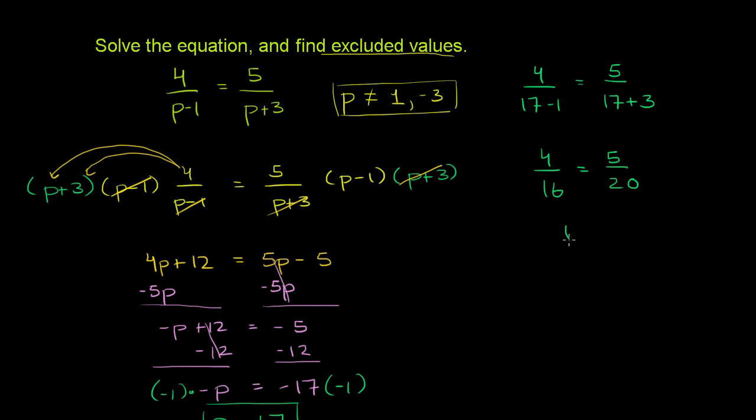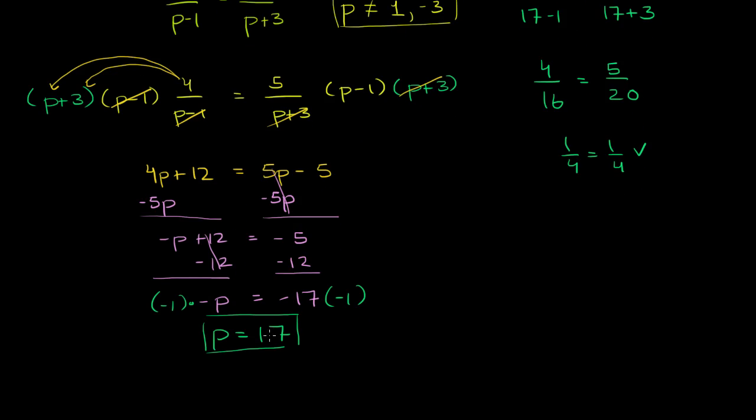So this is the same thing as 4 over 16 needs to be the same thing as 5 over 20. Or 4 sixteenths is the same thing as 1 fourth, and that needs to be the same thing as 5 twentieths, which is the same thing as 1 fourth. So it all checks out. So these are excluded values, and lucky for us, this wasn't one of them.